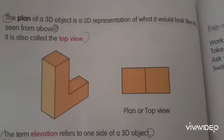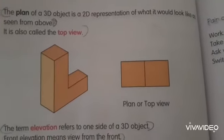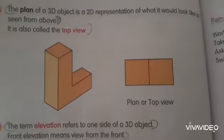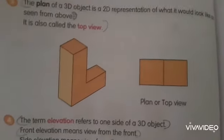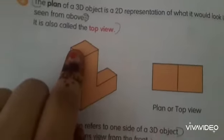Now, what do we understand by a plan? The plan of a 3D object is a 2D representation of what it would look like as seen from above. So, a plan of a 3D object is a 2D representation of the top view. It is also called the top view. Here, this is the 3D figure given and here is the plan or top view of this 3D figure. The top view of the 3D figure is called the plan, and this is the 2D representation of a 3D object.